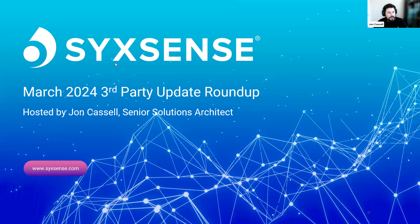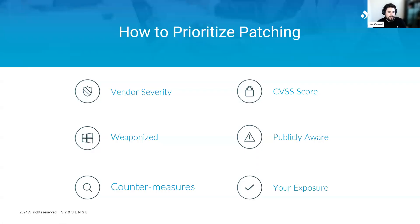Let's briefly differentiate between a vulnerability and a patch or update. A vulnerability refers to a flaw or misconfiguration within a product, application, or operating system that, if exploited, could allow attackers to compromise said system. Conversely, a patch or update is a software release provided by the vendor to address such vulnerabilities. It's also very important to note that not all vulnerabilities can be patched, and not all patches resolve vulnerabilities.